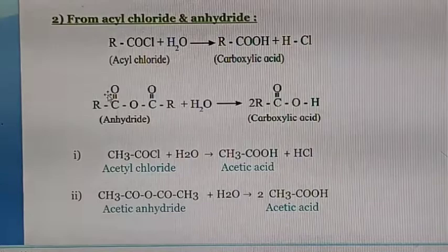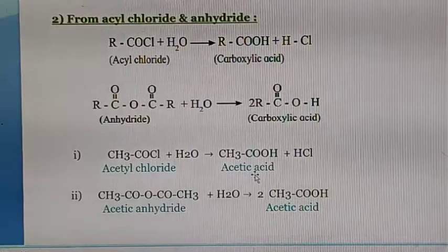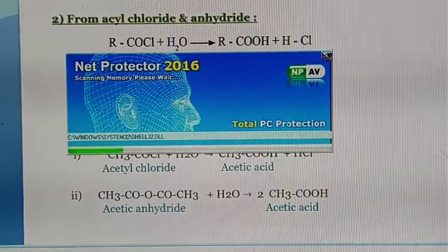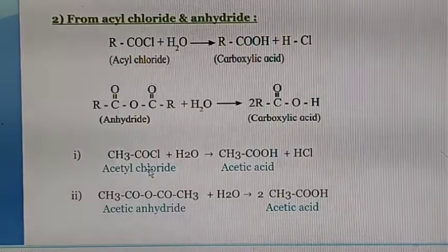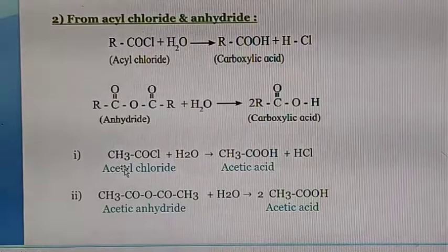If a question asks how to prepare acetic acid from acetyl chloride, write that reaction. If asked how to prepare propanoic acid from acetyl chloride, then write CH₃CH₂COCl plus H₂O gives CH₃CH₂COOH. So from C₂H₅COCl we can prepare propanoic acid.